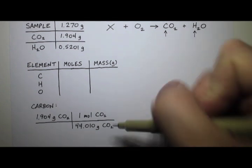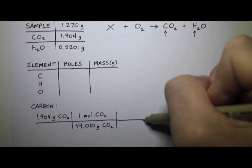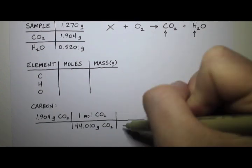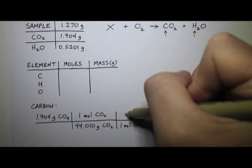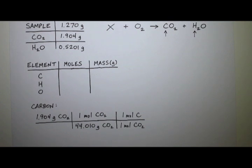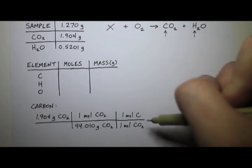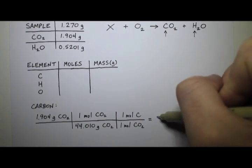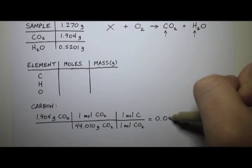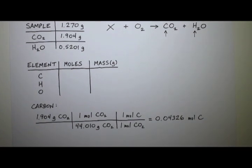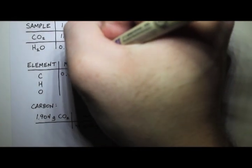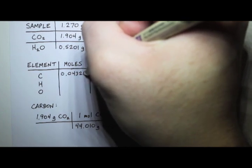And then I'm not interested in carbon dioxide. I'm interested in carbon. And I know that in one mole of carbon dioxide, well, there's one carbon there. So that would be the same as one mole of carbon is in one mole of carbon dioxide. So now you do this on the calculator, type in the numbers, and you end up getting 0.04326, and this is moles of carbon. That's the first thing we can put in the chart. So moles of carbon, 0.04326. Great.